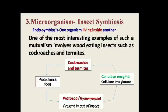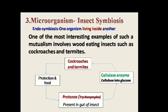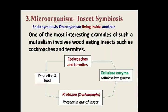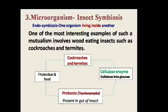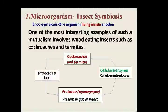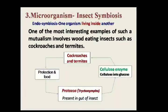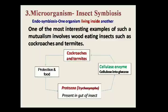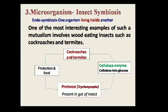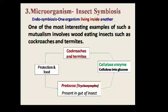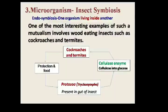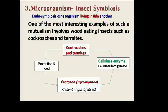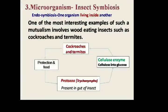The third type of microbial symbiosis is between microorganism and insect — an endosymbiosis where one organism lives inside another. One of the most interesting examples involves wood-eating insects such as cockroaches and termites. Cockroaches and termites cannot utilize cellulose, but microorganisms present in their gut, such as protozoa, have the ability to produce the cellulase enzyme. This enzyme degrades cellulose and provides glucose to the insects. In return, the cockroaches provide protection and food to the protozoa, so both partners benefit.